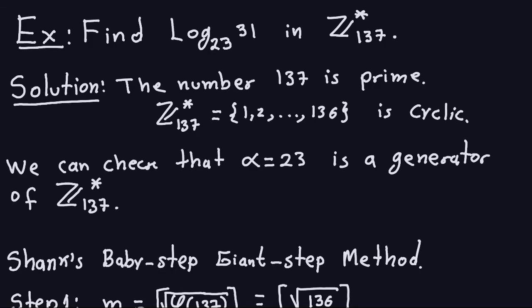Hello and welcome again. In this video we'll compute the discrete log in base 23 of 31 in Z*137, using the baby step giant step algorithm that we saw in the previous video. If you haven't watched that video, go ahead and watch it so this makes more sense to you.